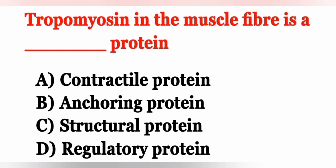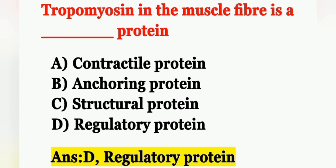Next question: Tropomyosin in the muscle fiber is a — Option A: contractile protein, Option B: anchoring protein, Option C: structural protein, Option D: regulatory protein. Tropomyosin is a regulatory protein. Option D is the correct answer. In skeletal muscle, contractile proteins include actin and myosin, while regulatory proteins include tropomyosin and troponin.